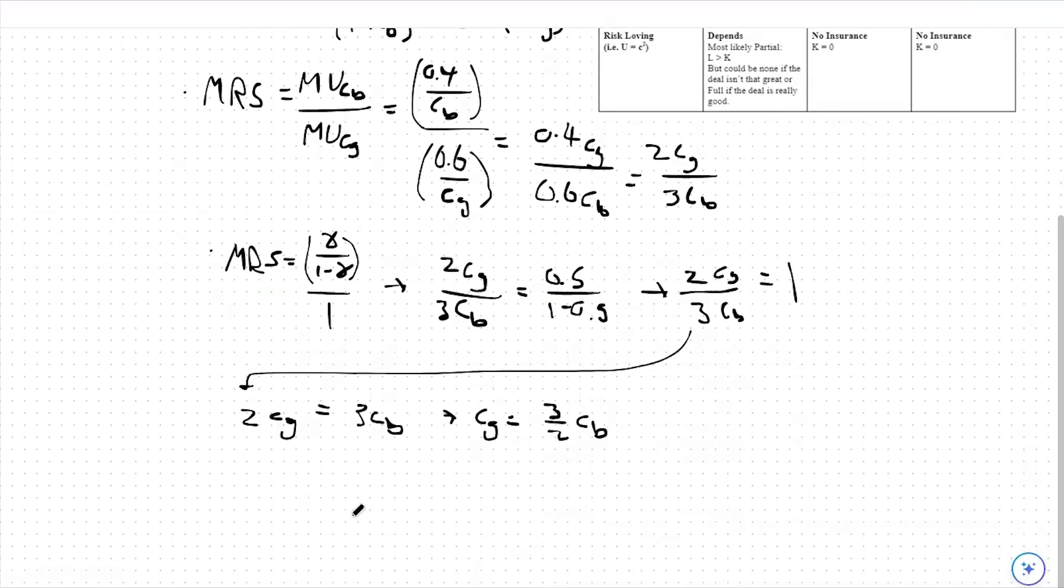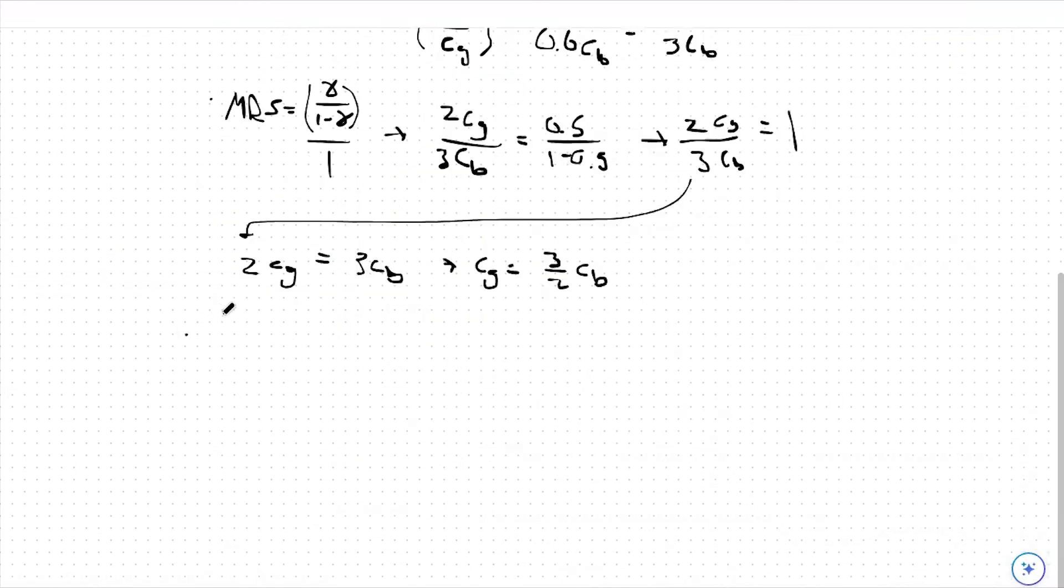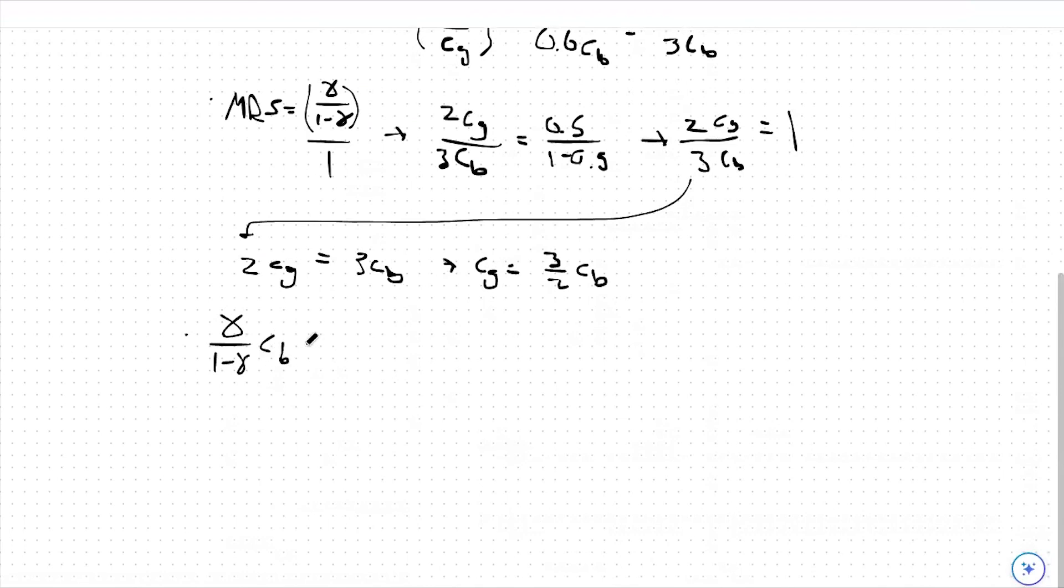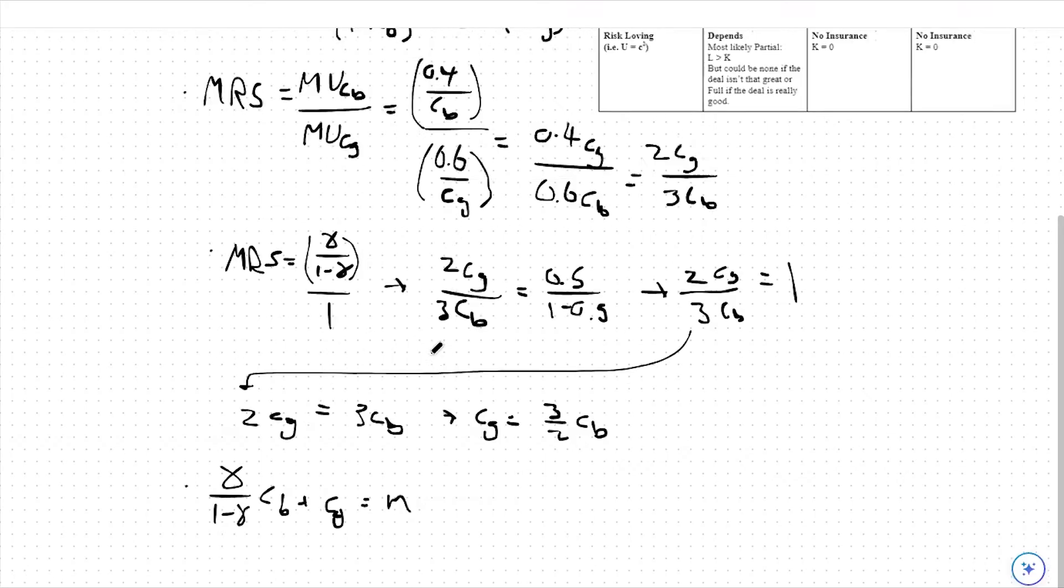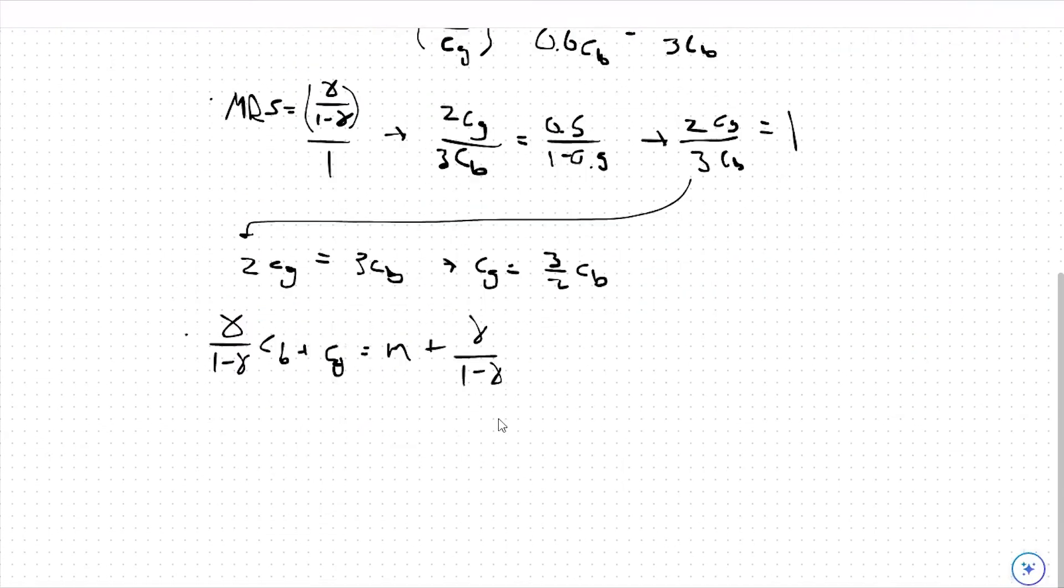From there, we should go back to our budget constraint that we have written up here. I'm going to rewrite it down here. So gamma over 1 minus gamma times CB plus CG is equal to M, or our starting income, plus again gamma over 1 minus gamma times M minus L. A lot of this information is given to us in the problem. For instance, we found that gamma over 1 minus gamma is 1.